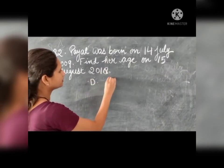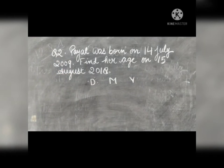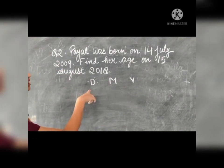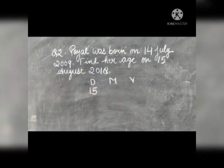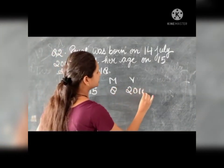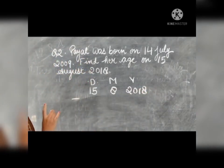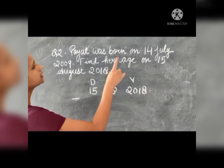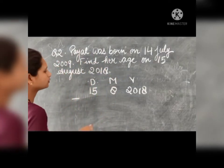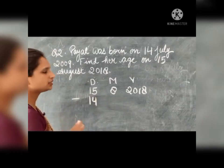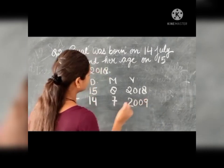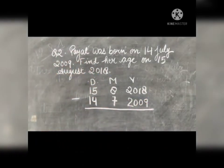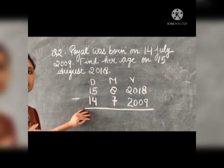You have to write date, month and year. You have to write her date on 15 August 2018: day 15, month 8, year 2018. Minus when she was born — she was born on 14 July 2009. We have to subtract this. This is the formula for finding out age. You can find out your own age also using this method.